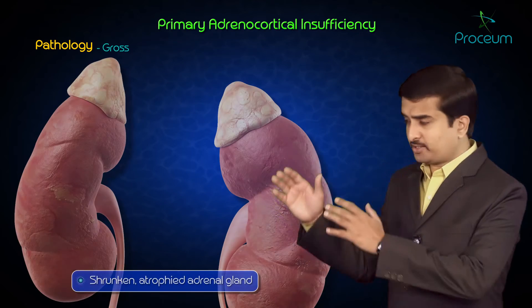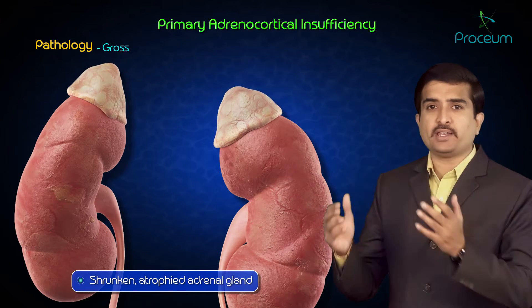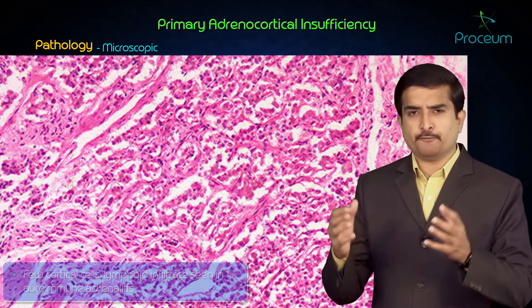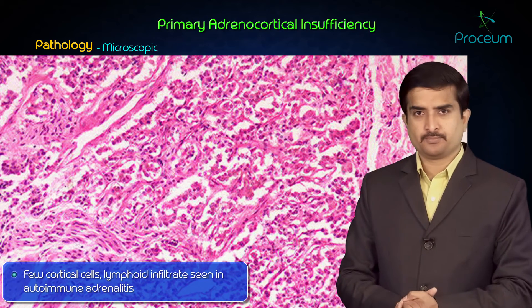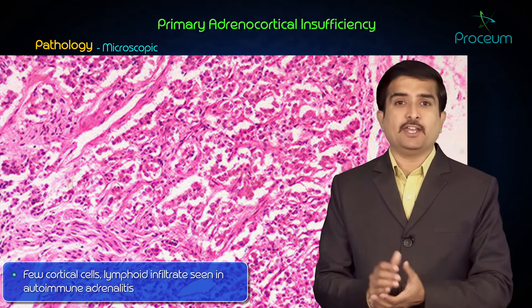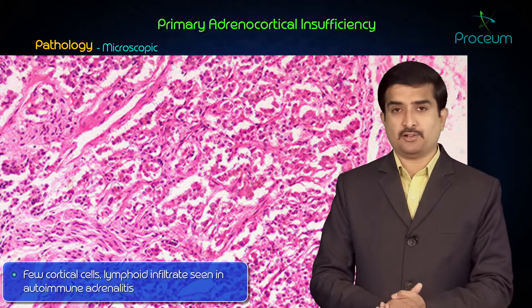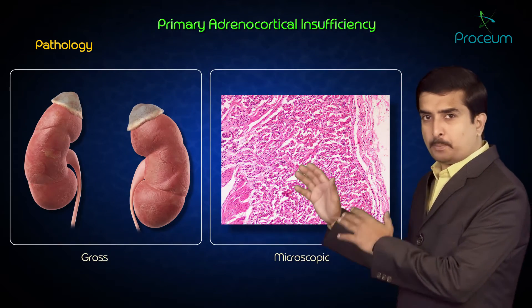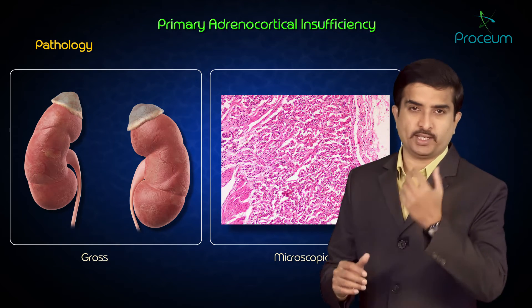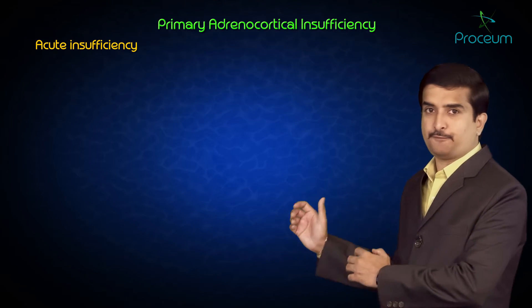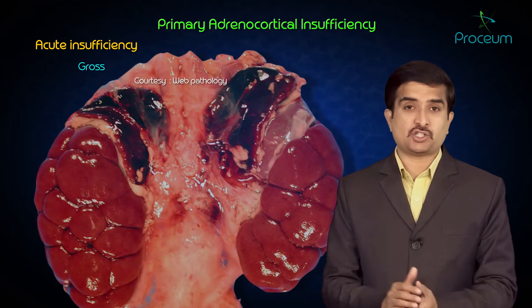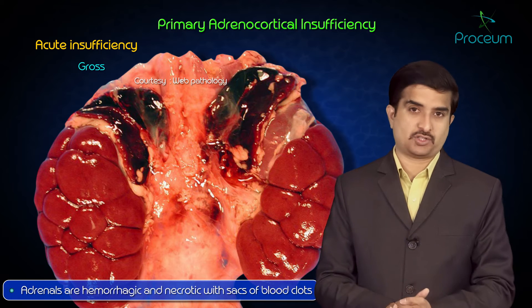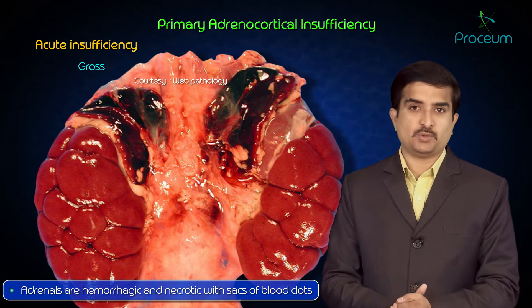In the chronic form, the gross picture shows a shrunken, atrophied adrenal gland, while the microscopic picture shows very few cortical cells and lymphoid infiltrate, especially seen in autoimmune adrenalitis. In acute insufficiency, the gross picture shows adrenals that are hemorrhagic and necrotic with sacs of blood clot.